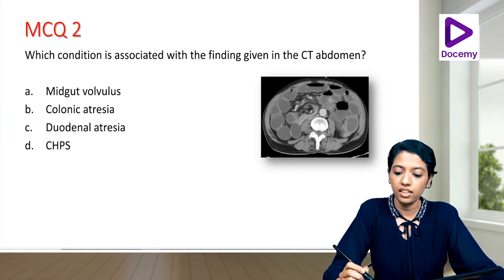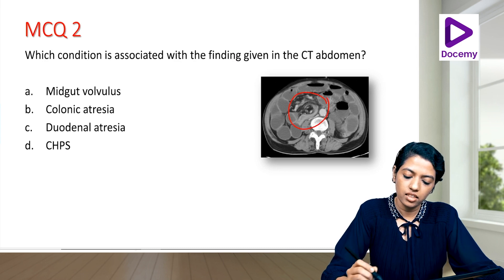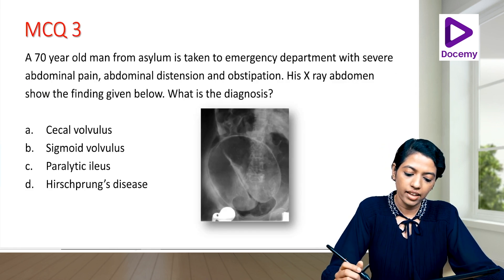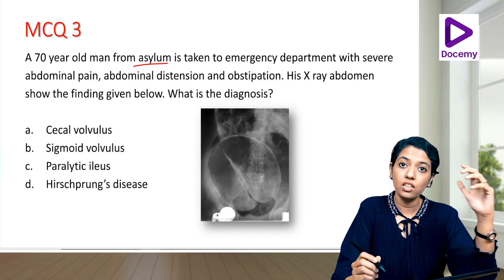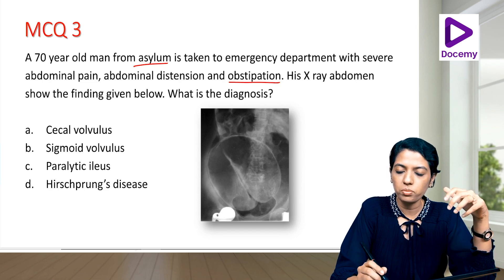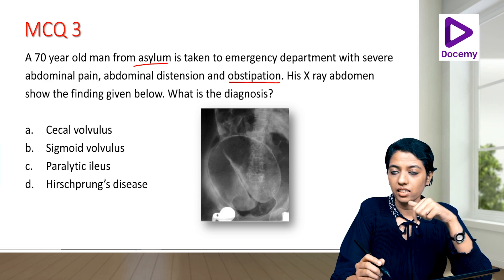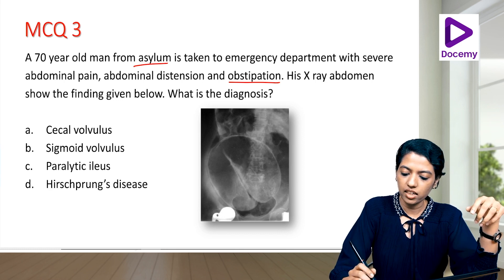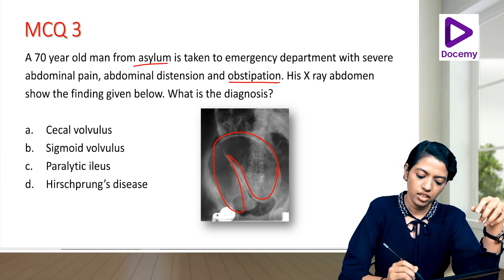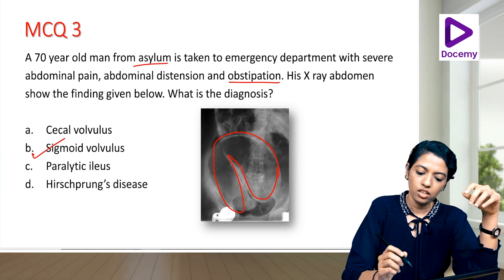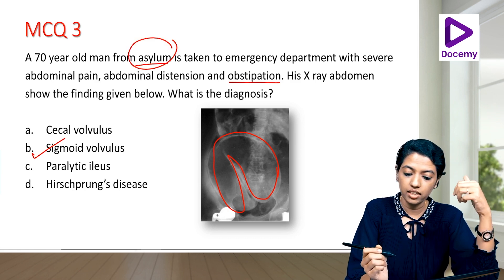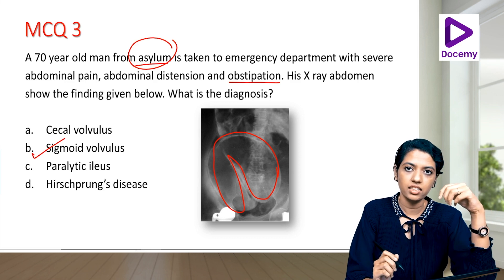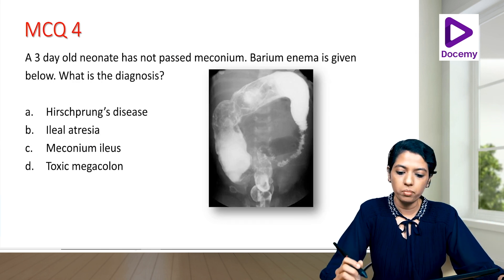MCQ 2: CT showing the whirlpool sign is associated with midgut volvulus. MCQ 3: A 70-year-old man from an asylum with severe abdominal pain, distension, and obstipation (no gas passing per rectum) — x-ray shows the classic coffee bean appearance, indicating sigmoid volvulus. The clue is that it's a neuropsychiatric patient.